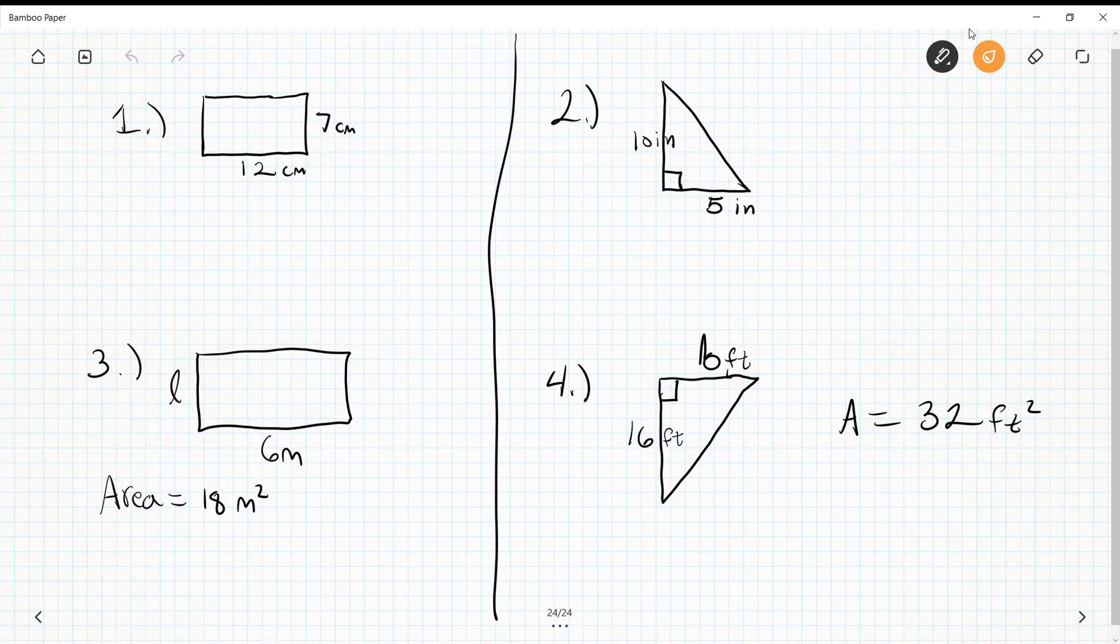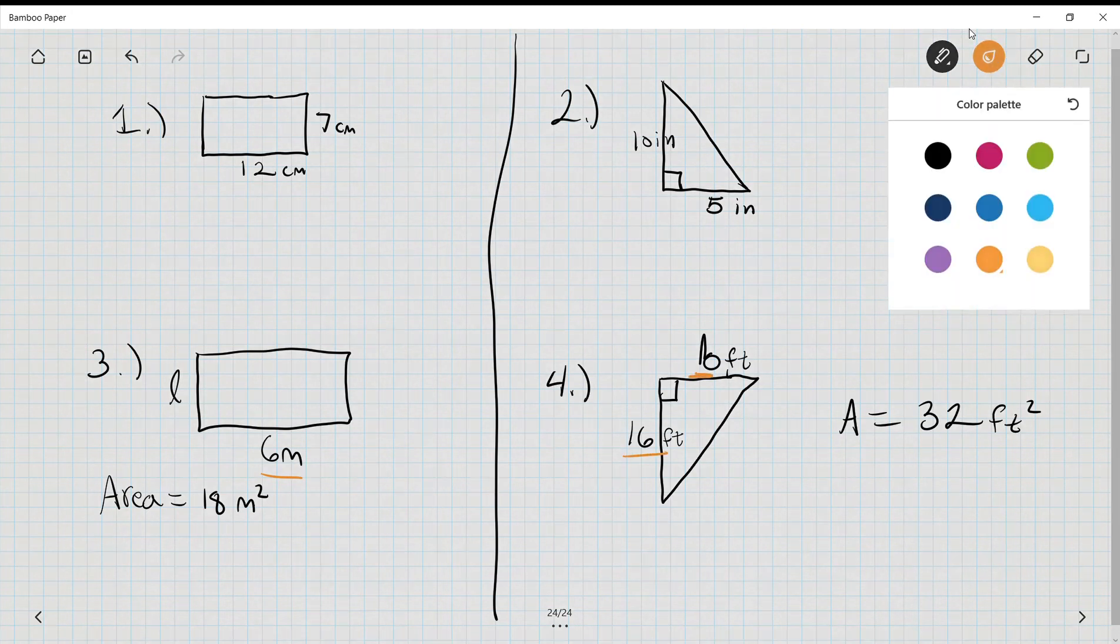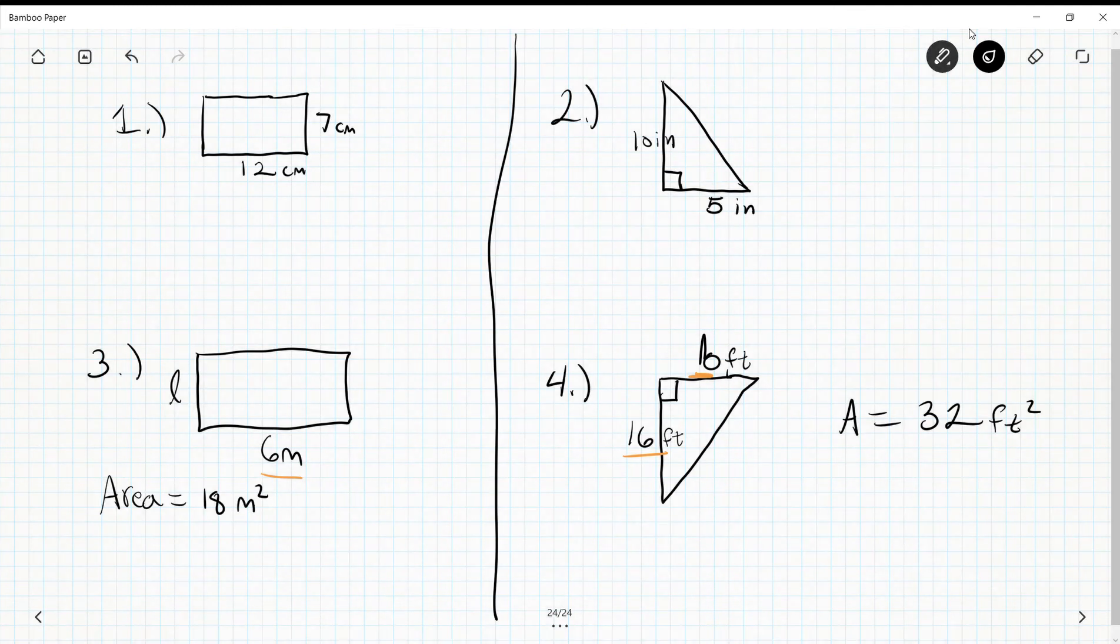Now you can try one and two on your own. Three and four I give you one of the dimensions, whether it's a length or width, and I ask you to find the missing one. So I suggest pausing this now and trying one and two. If you get confused, look back earlier in the video.